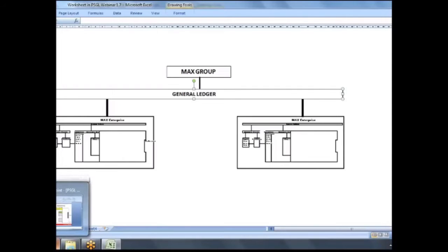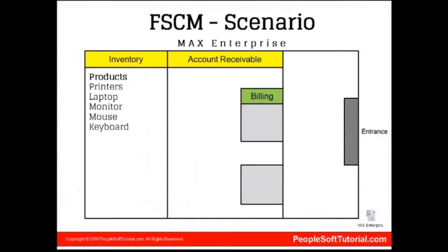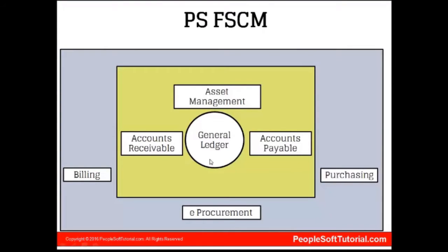In PeopleSoft FSCM, general ledger is the core, holding all accounting details. Accounts receivable, accounts payable, and asset management interact with general ledger on a periodic, possibly daily, basis — meaning they send information to general ledger. Other modules like billing interact with accounts receivable, while e-procurement and purchasing interact with accounts payable. In some scenarios, billing also interacts directly with general ledger. The design depends on the organization's requirements, so we need to understand their current processes before designing the system.